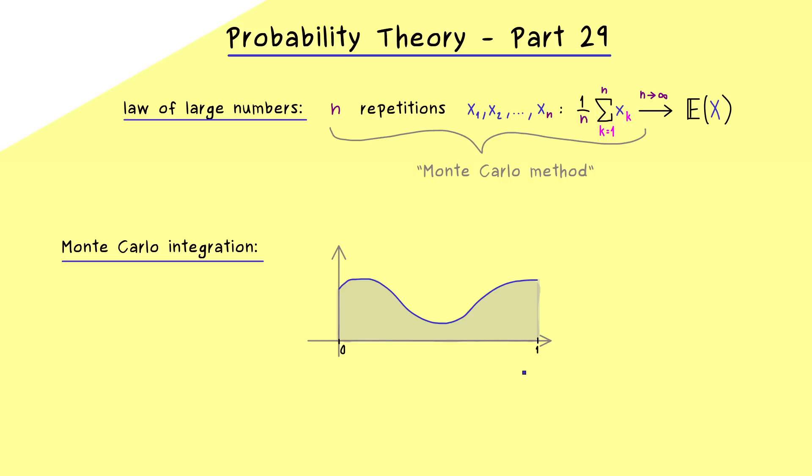Hence one possibility to calculate that with our random methods would be to throw points randomly into this picture. And then by counting the numbers of points that lie inside the area gives us the ratio of this area to the total area. So this is definitely a valid approach but it turns out that for the area we are given by a graph of a function we have a much simpler method as well.